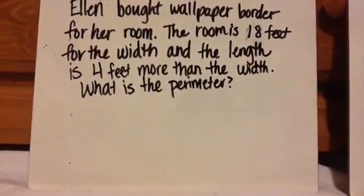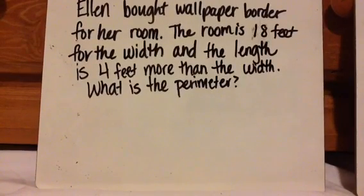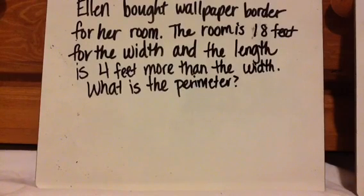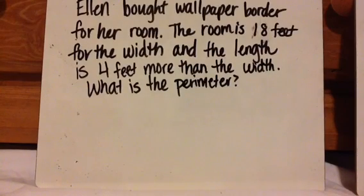Okay, I want you to see if you can solve this one. I've changed the wording up a little. Ellen bought wallpaper border for her room. The room is 18 feet for the width and the length is 4 feet more than the width. What is the perimeter? So press pause. I want you to make sure you draw a picture and show how you came up with the dimensions for the length. And press play when you're ready to check. So I make these questions up, by the way, at the drop of a hat. So I forgot to put on there how much wallpaper border will she need for her room, which basically means what is the perimeter of the room, which will determine the amount that she needs to buy.